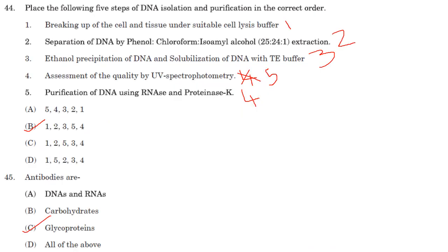The correct order for DNA isolation and purification is: (1) breaking of cells and tissues under suitable cell lysis buffer; (2) separation of DNA by phenol-chloroform-isoamyl alcohol extraction; (3) ethanol precipitation of DNA and solubilization with TE buffer; (4) purification of DNA using RNase and proteinase K; (5) assessment of quality by UV spectrophotometry. The order is 1, 2, 3, 5, 4 — seen in option B.